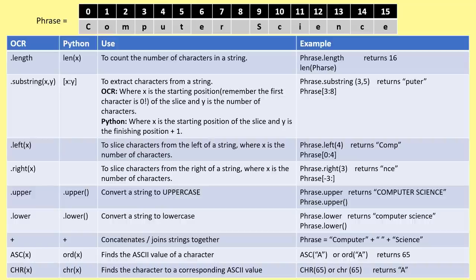In both OCR and Python, dot upper and dot lower convert a string to uppercase or lowercase. To concatenate strings, use plus: phrase equals 'computer' + ' ' + 'science' gives 'computer science'. To find the ASCII value of a character: asc('A') in OCR or ord('A') in Python returns 65. To convert back: Chr(65) in OCR or chr(65) in Python returns capital A.